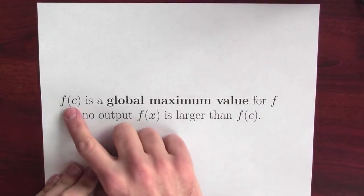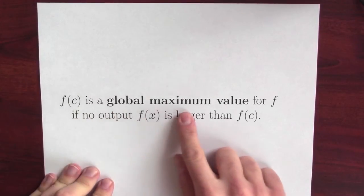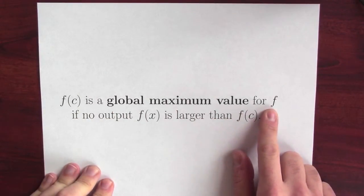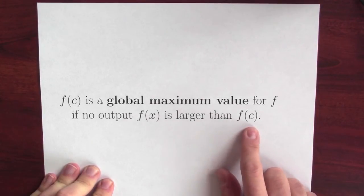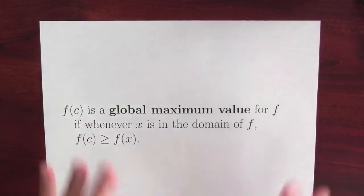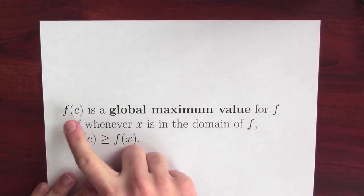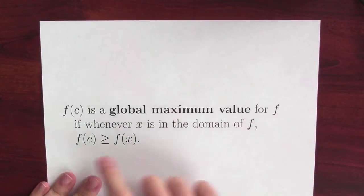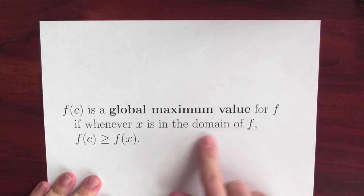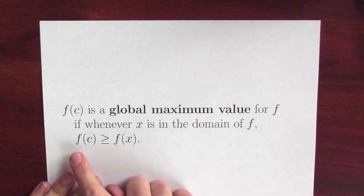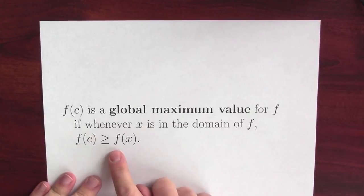The word local here is really in contrast to the word global. We'll say, in fact, everyone will say that f of c is a global maximum value for the function f if no output of the function is larger than f of c. Maybe that's too cute of a way to say it. Here's a more precise way to say it. f of c is a global maximum value for the function if whenever x is in the domain of f, I'm only going to be considering inputs in the domain, of course. Then f of c is bigger than or equal to f of x.